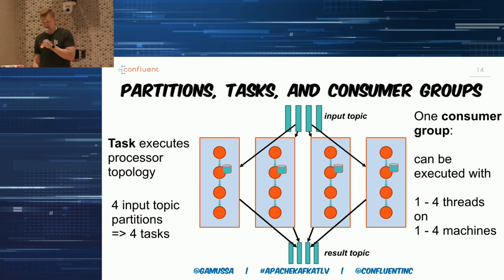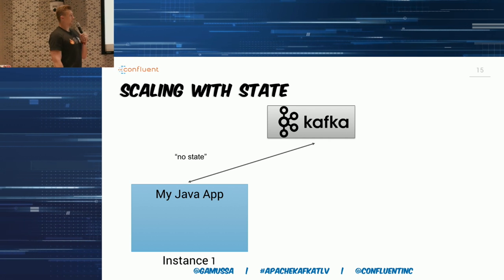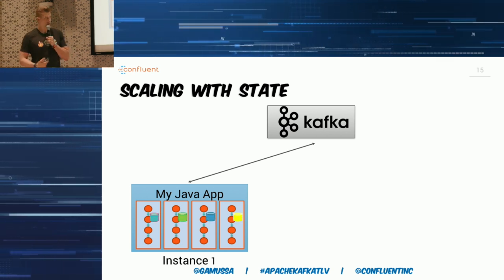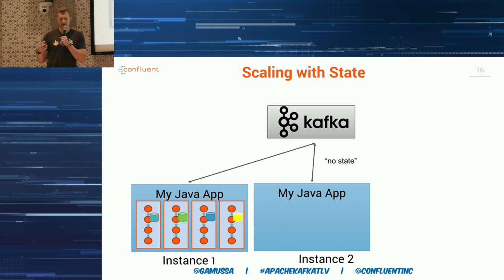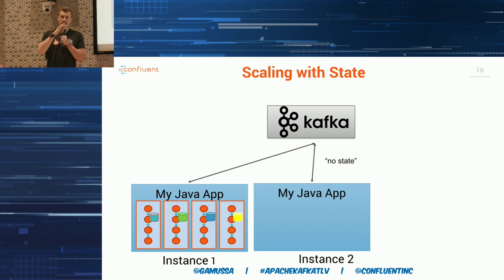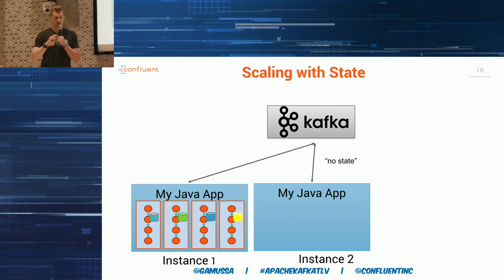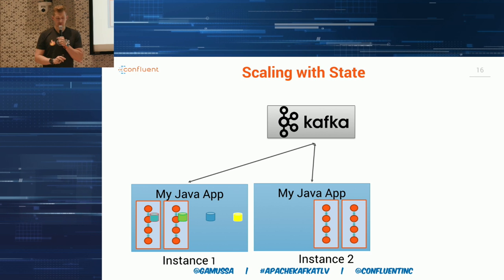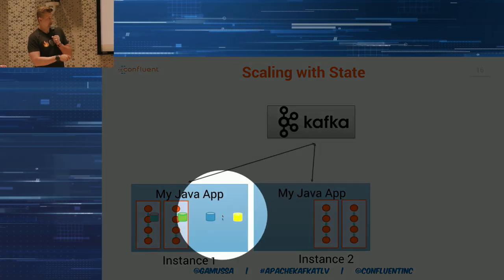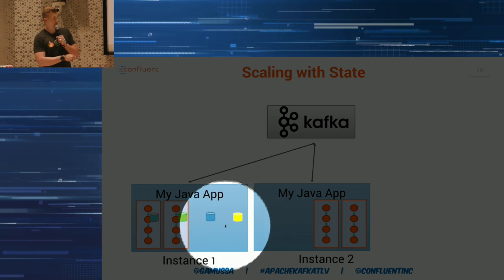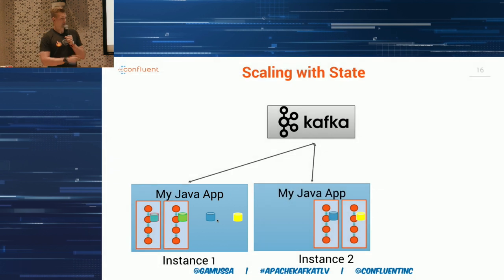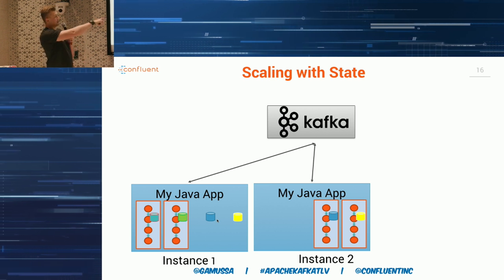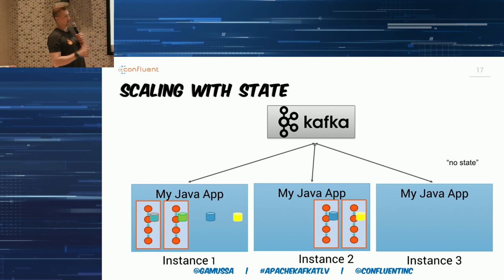We can retrieve data from the state store. To scale, we start with one application instance where all tasks execute. Then we start another application that joins the consumer group. This triggers the rebalance protocol, and some of the tasks that were executing on instance one will migrate to instance two. The local state files are preserved on the file system, which is important for scaling down.